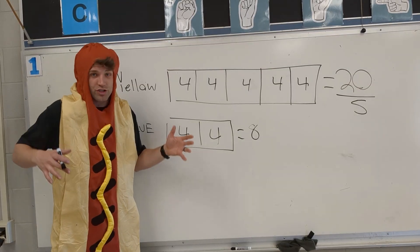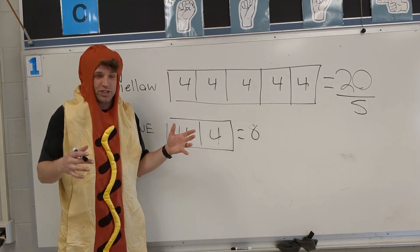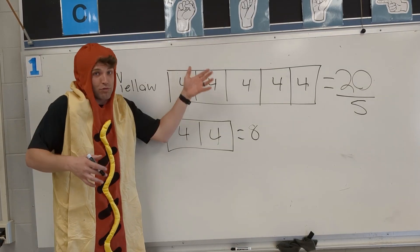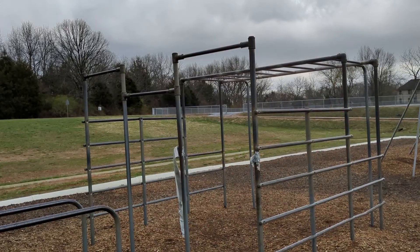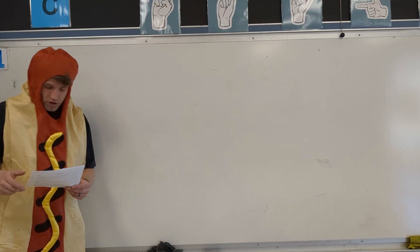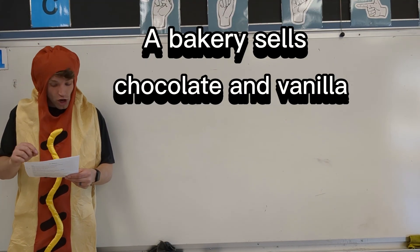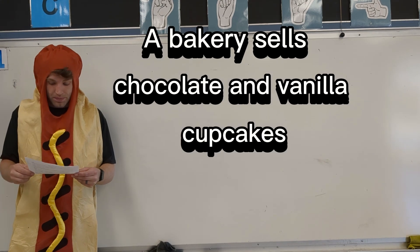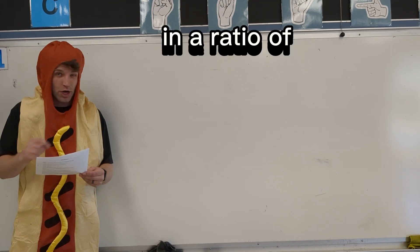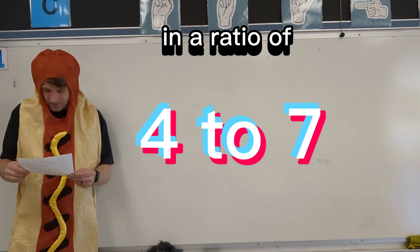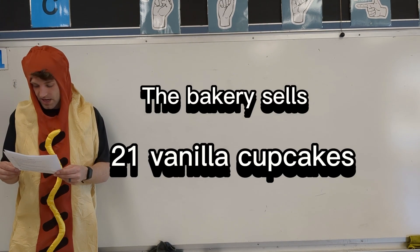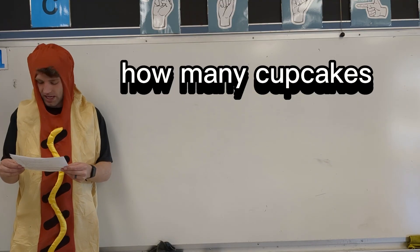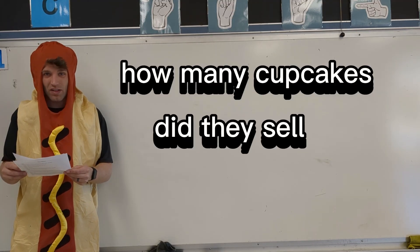Tape diagrams are just great ways for us to visualize and break down ratio problems. Now you try this one. A bakery sells chocolate and vanilla cupcakes in a ratio of 4 to 7. The bakery sells 21 vanilla cupcakes. How many cupcakes did they sell in total?